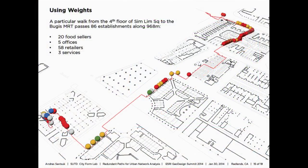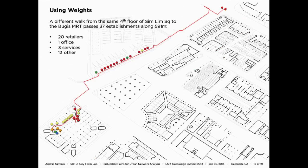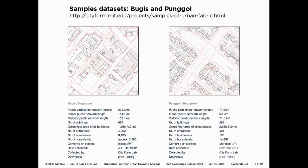Here's an example: a walk from the fourth floor of a shopping center in Singapore down staircases and routes through buildings and streets to a subway stop, compared to the exact same walk along a different route. The weights are very different — we can choose routes as pedestrians depending on what we want to pass by. To conclude, this toolbox is freely downloadable from our website and open source, and we invite people to change it and add to it.